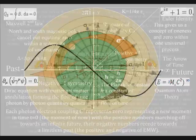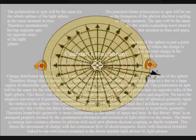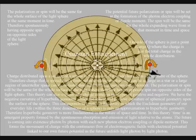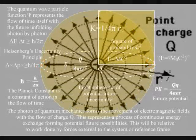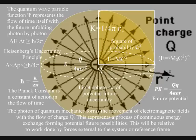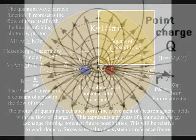For the photon polarization or spin will be the same for the whole surface of the sphere having opposite spin on opposite sides of the light sphere. This is because of the nature of charge, a spherical charge will have the same charge at the center as it has on the outer surface.